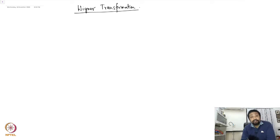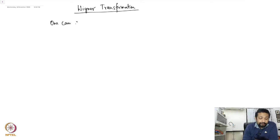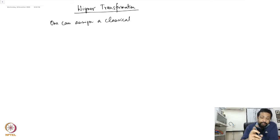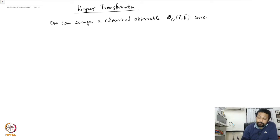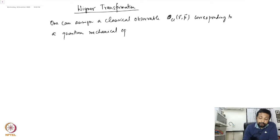Now we look at what is called the Wigner transformation. Some of you may already have learned this in quantum mechanics, but it is a very brief review. The idea is that one can assign a classical observable O_Cl(R,P) corresponding to a quantum mechanical operator O-hat(R,P).